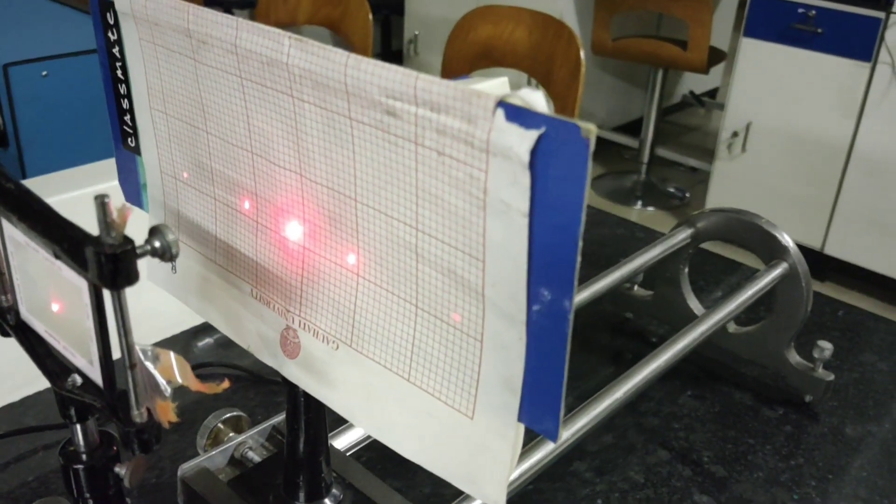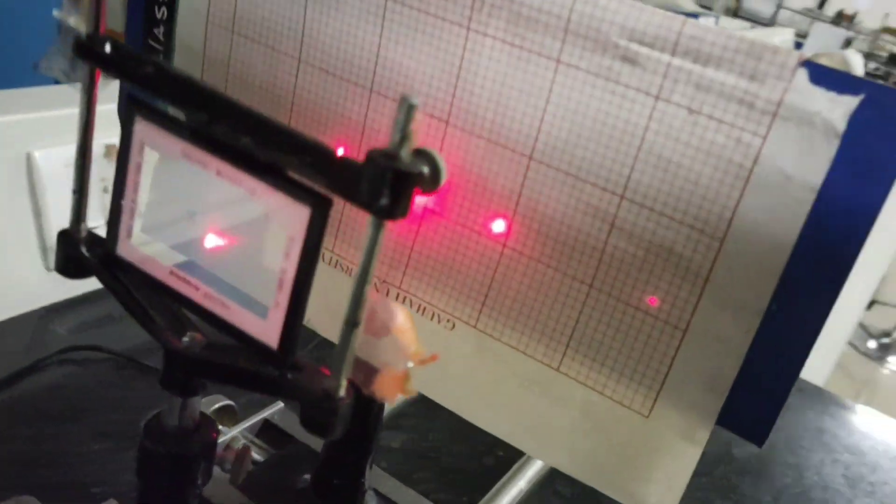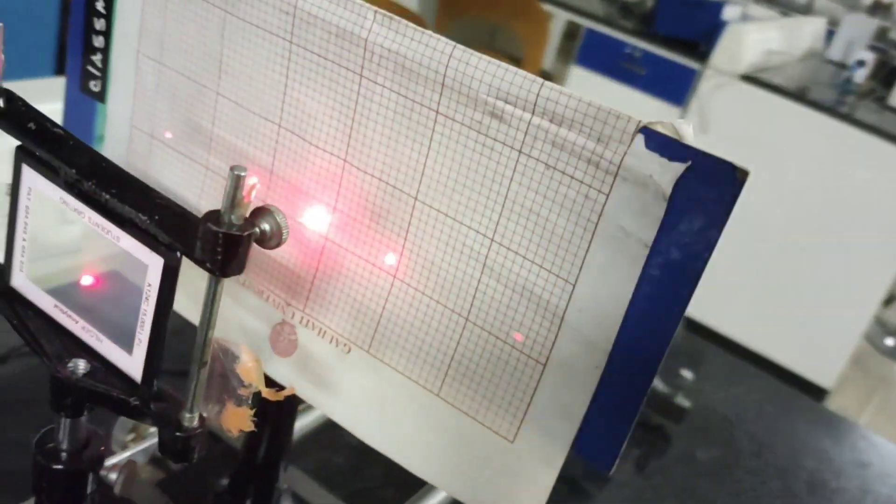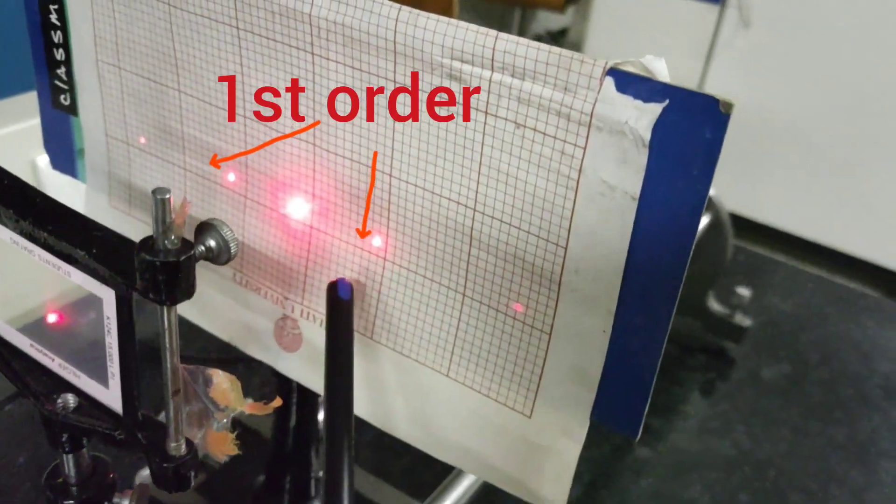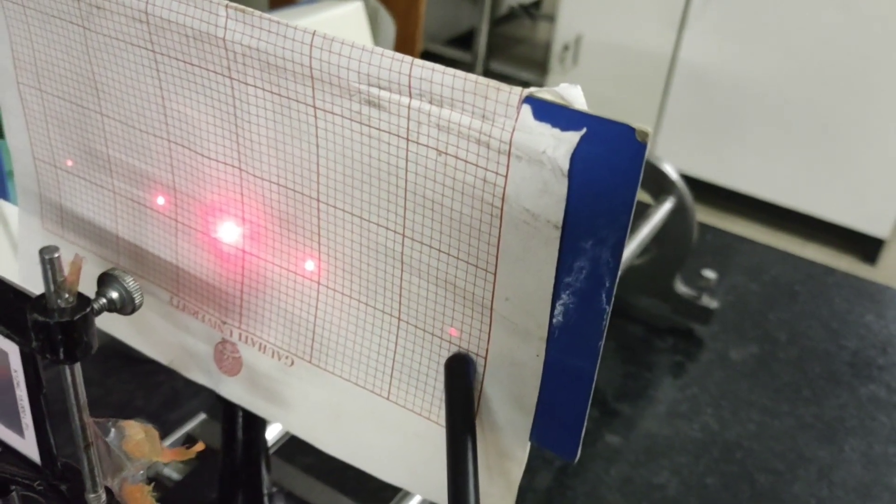When we observe the pattern formed on the optical screen, we can see there is a bright central maxima, a bright spot in the center. Then two nearby bright spots are known as the first order maxima, and those further away are known as the second order maxima.